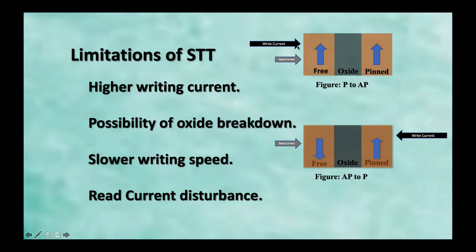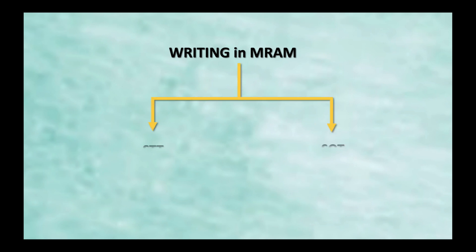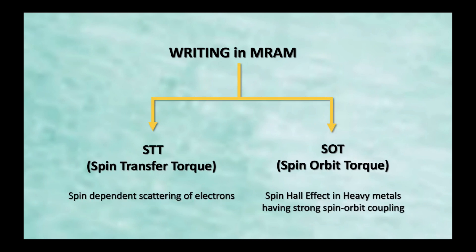Third is possibility of oxide breakdown. Again, because we are sending the write current which is large in magnitude compared to the read current. So, it can lead to the breakdown of the oxide and the MRAM will be destroyed. And, for the same reason, because the current has to pass through oxide, the writing current density is also higher.